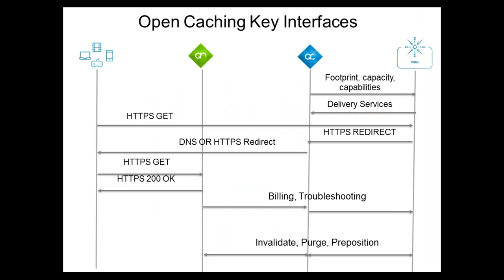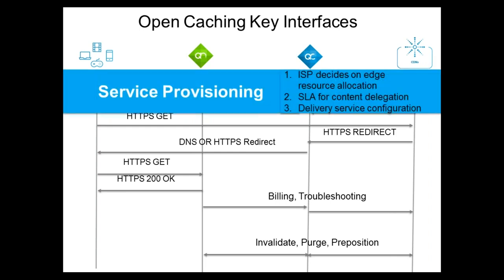There are basically four entities in this architecture: the user, the edge nodes — called OCNs (open cache nodes) in SVA terminology — the QC which is called the open cache controller, and the delegating entity which is the CDN. The architecture expects four key APIs: service provisioning, which lets the content ecosystem see what resources are opened up by service providers for content delivery; request routing done using HTTP/HTTPS redirection; a logging API allowing the CDN to receive delivery logs; and a content management API for pre-population, invalidation, and purging of content.